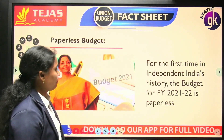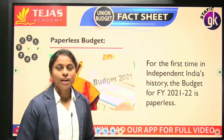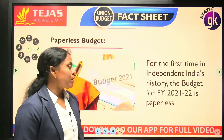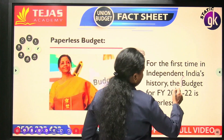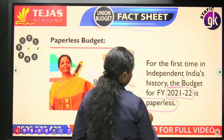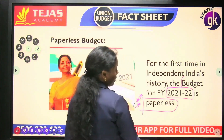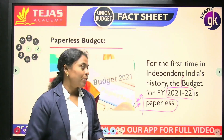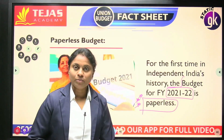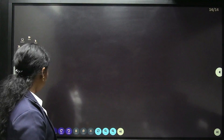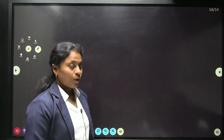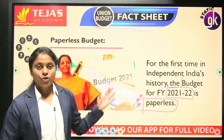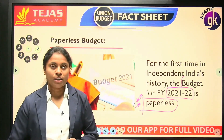Paperless budget — for the first time in independent India's history, the budget for the financial year 2021–2022 was paperless — environmental and eco-friendly. Since then, the Finance Minister has been introducing the budget using a digital device rather than paper. So it is an eco-friendly budget. These are the few static GK points that are important for the examination on the topic of the budget. Thank you.